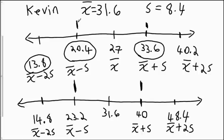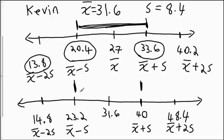By comparison, LeBron James' usual range is about 20.4 to 33.6 points — a narrower band than Durant's. LeBron James is more consistent; his range for usual values is smaller. But Kevin Durant scores more points overall, making him the more prolific scorer. That's one of the ways we use the standard deviation to interpret data.